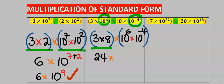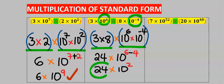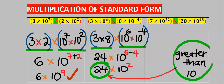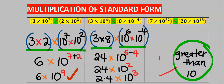Next, I apply the law of indices — 6 minus 4 as the power. However, 24 is greater than 10, and this is not allowed in standard form. So I introduce a decimal to make it 2.4 and increase the power by one to get the final answer.